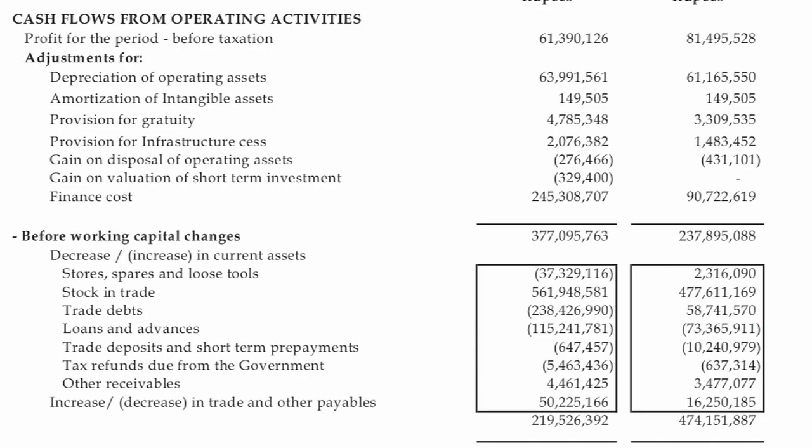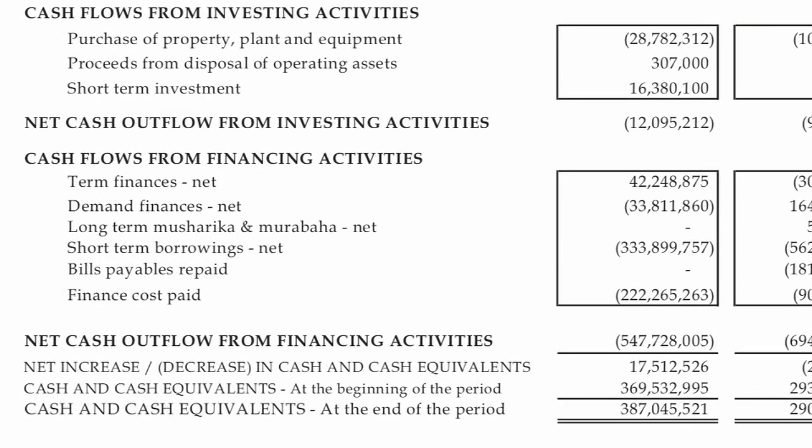There are three main sections. The first section shows the sources and uses of cash from operating activities. You'll see net income, and you'll have additions to it for non-cash expenses, subtractions for non-cash gains, and then the changes in the major balance sheet accounts to arrive at cash used or cash provided by operating activities.